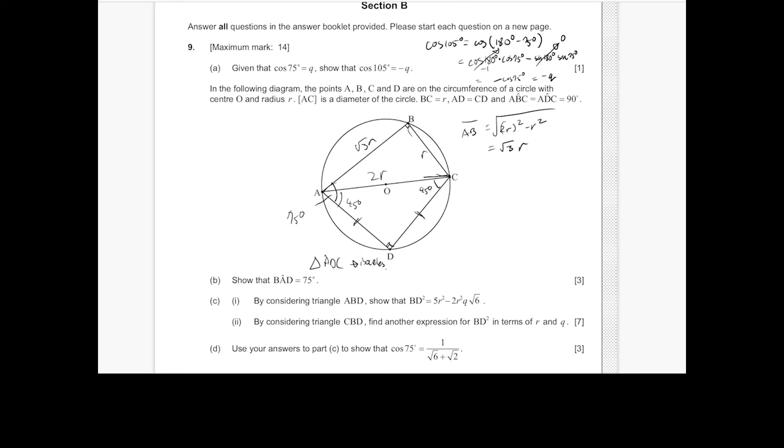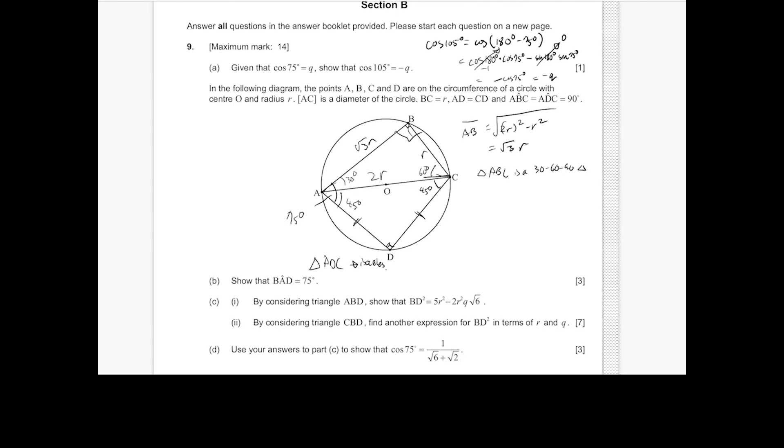So triangle ABC is a 30, 60, 90 triangle. That means angle BAC is 30 degrees and angle CAD is 45 degrees. So angle BAD is going to be 30 degrees plus 45 degrees, which is 75 degrees.